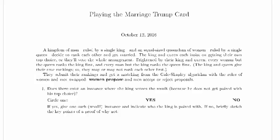The king and queen each insist on getting their own top choice or they'll veto the whole arrangement. Frightened by their king and queen, every woman but the queen ranks the king first. So all of the women in the queendom put the king first in their ranking list, and every man but the king ranks the queen first. The king and queen give their true rankings, so they may or may not rank each other first.